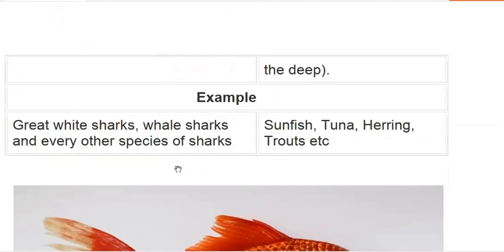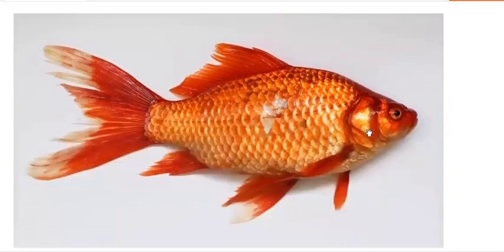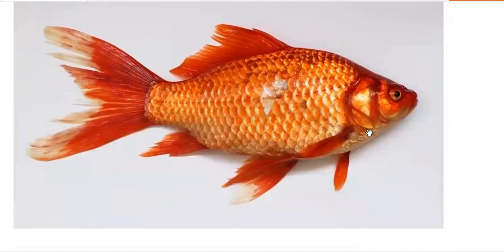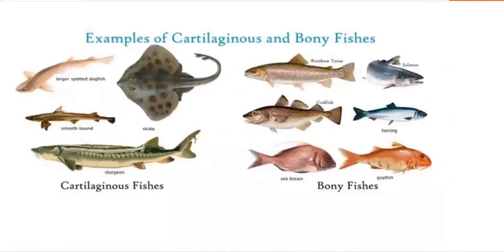Examples of bony fish include tuna fish, sunfish, and herring trout. Bony fish are regularly consumed, and examples include common food fish.